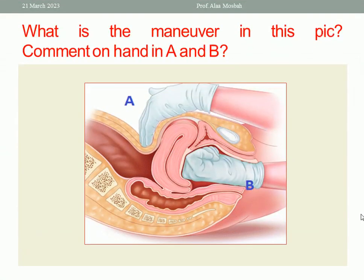Okay. Let us start with the first. What is the maneuver in this picture and the comment on hand A and B? I want you to try to answer before me. This maneuver is bimanual uterine compression. It is done in cases with atonic postpartum hemorrhage to do compression to the uterus to stop bleeding. One of the maneuvers done in atonic primary postpartum hemorrhage.